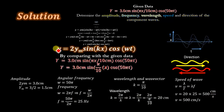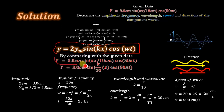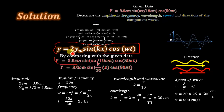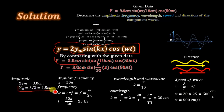Comparing our derived equation with the given equation y = 3.0 cm sin(πx/10 cm) cos(50πt), we solve for amplitude. Comparing 2ym with 3.0 cm gives 2ym = 3.0 cm. Dividing both sides by 2, the amplitude ym = 1.5 cm.